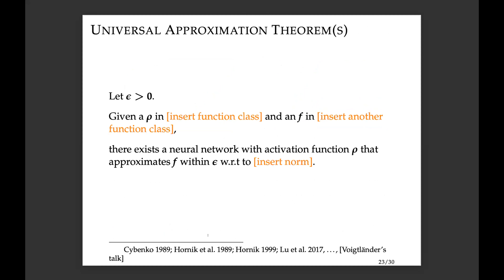The third method treats the entire network as a function and uses mathematical tools to analyze it. Here is Felix's talk in one slide — the universal approximation theorem: given epsilon > 0, an activation function rho in some function class, and a target function f in another function class, there exists a neural network with activation function rho that approximates f within epsilon with respect to the appropriate function class norm.